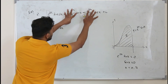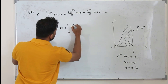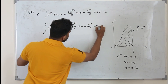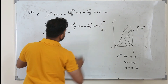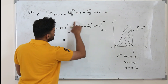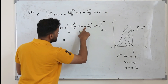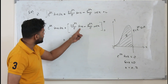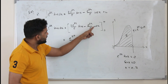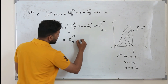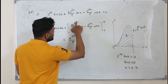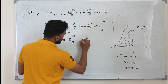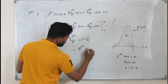Substituting the limits into the integral result: [e to the power 2x over 5 times (2 sin x minus cos x)] evaluated from 0 to pi. At the upper limit pi: sin pi equals 0, so the sine term vanishes; cos pi equals minus 1, giving plus e to the power 2pi over 5. At the lower limit 0: sin 0 equals 0, cos 0 equals 1, e to the power 0 equals 1, giving minus 1 over 5. So the area equals e to the power 2pi plus 1 divided by 5.